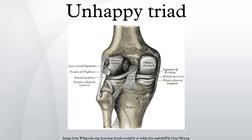An unhappy triad is an injury to the anterior cruciate ligament, medial collateral ligament, and the medial meniscus. The triad refers to a complete or partial tear of the anterior cruciate ligament, medial collateral ligament, and the medial meniscus.